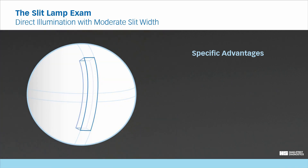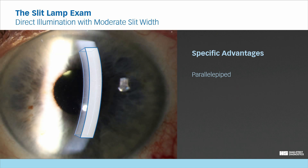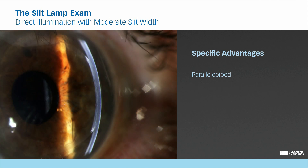Another unique advantage of the moderate slit width when examining the cornea is the parallelepiped. The moderate slit width provides a three-dimensional view of the clear corneal structure. This allows examination of the different layers of the cornea in a broader view, in contrast to the optical section, which shows the cornea only in two dimensions.